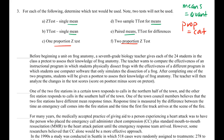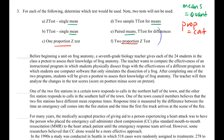The next thing we need to do is determine if we have one group or two groups — that's pretty straightforward. The only real exception is our paired means test, which is actually a one-group situation where that single group has two observations per member. So you'll have two observations for each member — like our before-and-after studies with a pretest and a posttest.